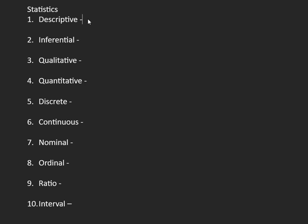Descriptive and inferential is just a combination of what statistics mean. For descriptive, from the root word 'describe,' we are going to describe our data. We're going to collect our data and describe it using tables or graphs.